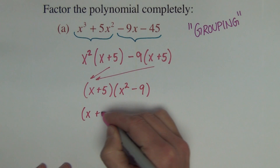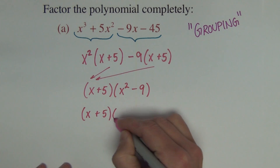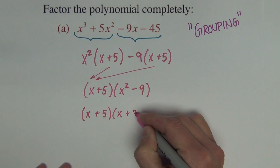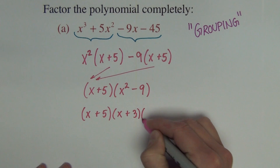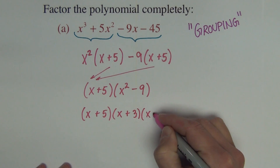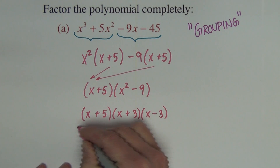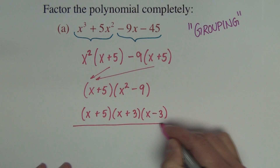And then that x squared minus 9, we recognize as a difference of two squares, which factors as x plus 3 times x minus 3.